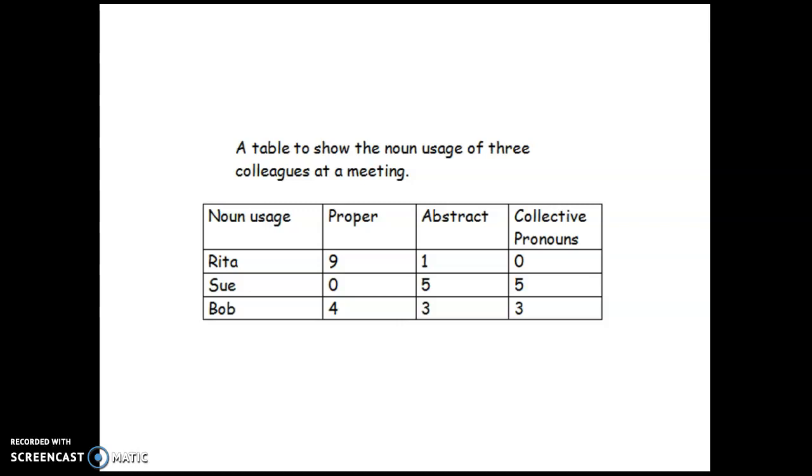Rita uses nine proper nouns to one abstract noun and no collective pronouns. Sue uses no proper nouns, five abstract nouns and five collective pronouns. Bob uses more of a range. Turn it into graphs or tables, please. Something numerical. And then we'll talk about what it reveals. Complete that. Pause the video and complete that. Then when you're done and you've come up with some conclusions, press play again.